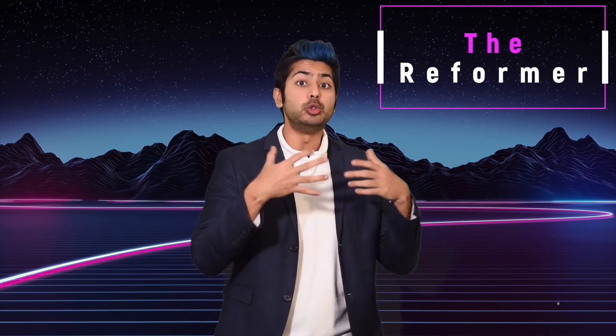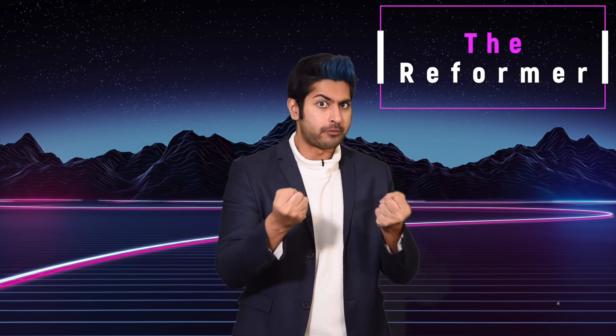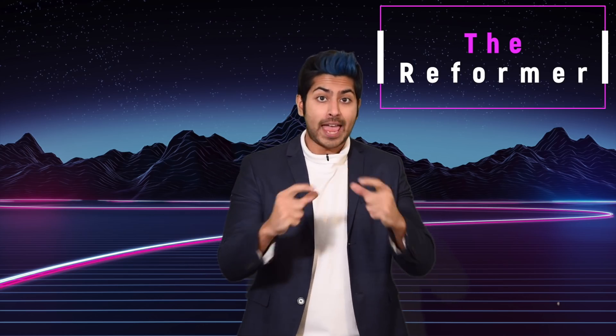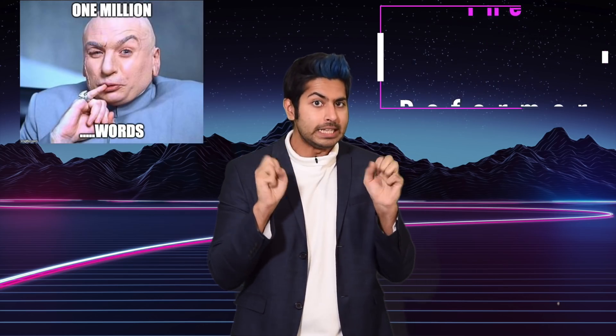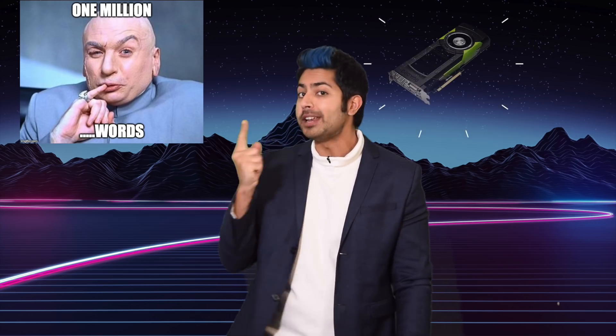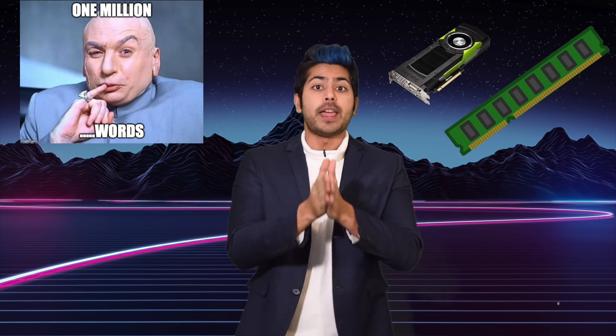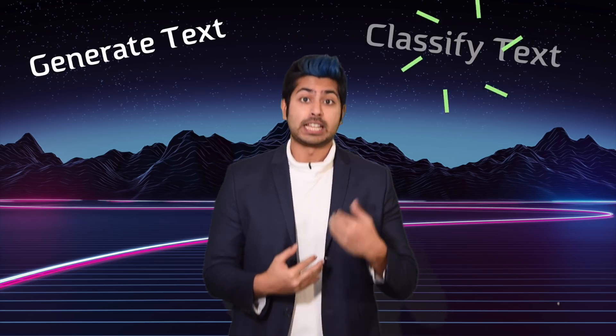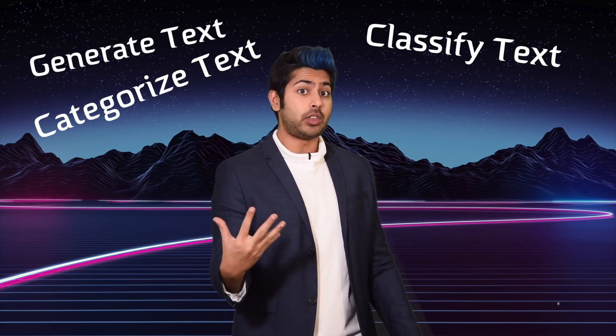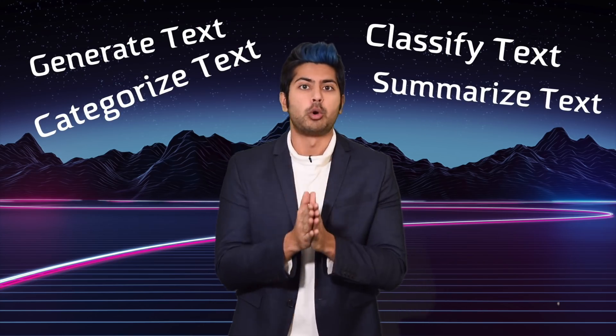Hello world, it's Siraj, and Google just released a new language model called the Reformer that's able to process text sequences that are up to one million words long using only one accelerator and 16 gigs of memory. What that means for you is that it's now easier than ever before to build a surprisingly impressive app or project that can generate text, classify text, categorize text, or summarize text with a low cost computer.